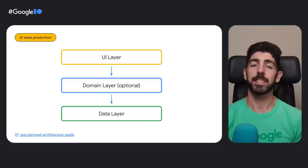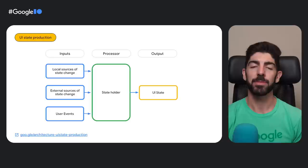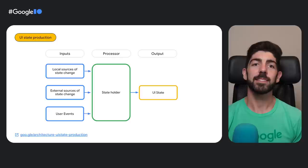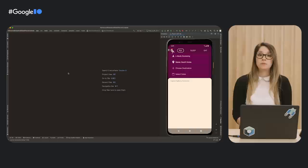To populate the UI with data coming from other layers of the hierarchy, we use a UI state production pipeline. This is a process in which we typically access the data layer from the ViewModel or any other state holder, apply business rules if needed, and then expose the screen UI state in an observable data holder class. The UI consumes that UI state and displays the information on the screen. If you're interested in learning more about UI state production, check the link in the video description. The data layer in this application is already implemented.